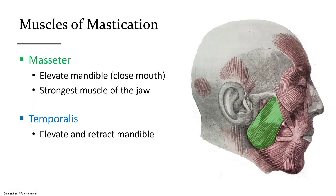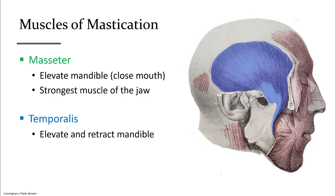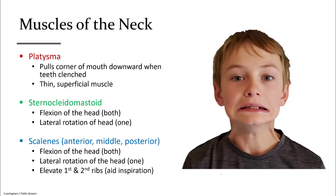There are two muscles of mastication you're responsible for. The masseter along the mandibular ramus, shown in green, and the temporalis in blue along the surface of the temporal bone. Both help elevate the mandible and crush food. The platysma is a thin muscle starting from the corners of the mouth and running down the anterior surface of the neck. You can demonstrate it by splaying the corners of your mouth — you'll see the edges of the platysma protruding on your neck.